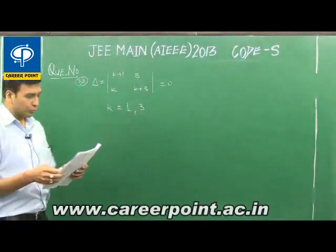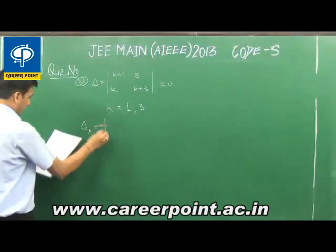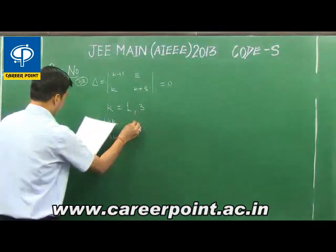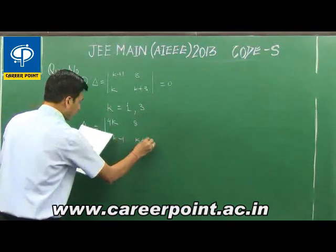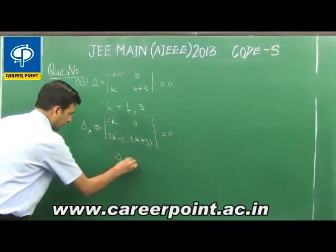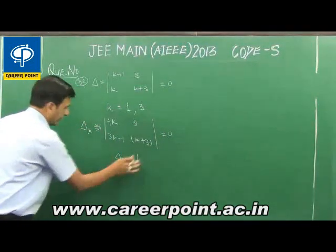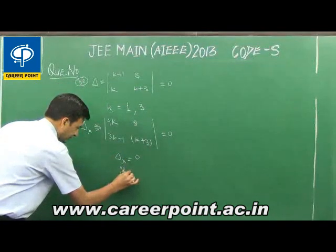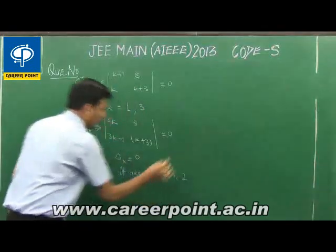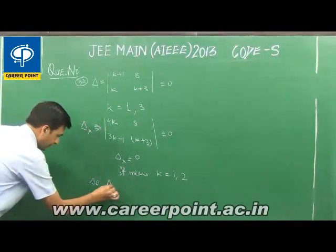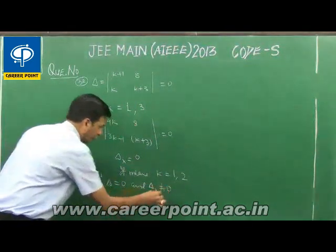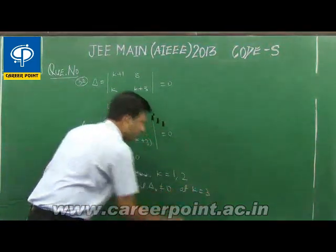For no solution, delta must be zero but delta_x must not be zero. Computing delta_x with entries 4k, 3k-1, and 8k+3 equal to zero, and solving, we find delta_x equals zero for k equal to 1 and k equal to 2. Therefore, delta equals 0 and delta_x is not equal to 0 at k equal to 3, giving us one valid value of k.